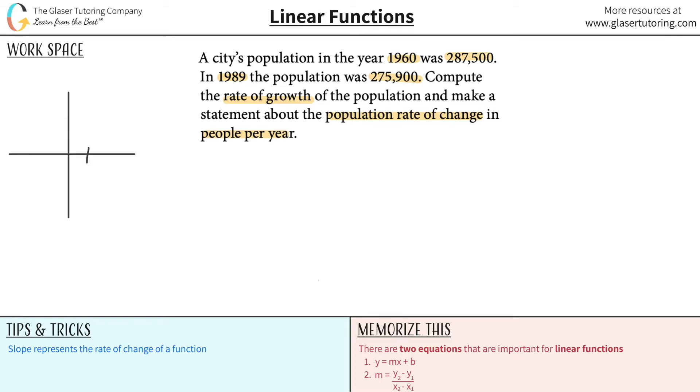So let's say this point, well, the x-axis, let's say, represents year, and the y-axis represents population. So in the year 1960, this is obviously not going to be to scale. This is the year 1960. The population was about 287,500. So I'm going to plot the point where those two would intersect, right about there.